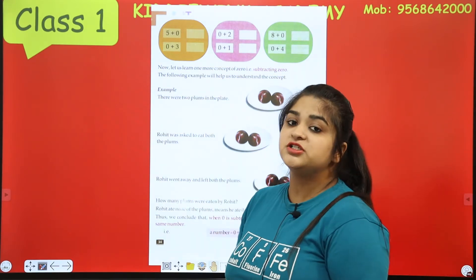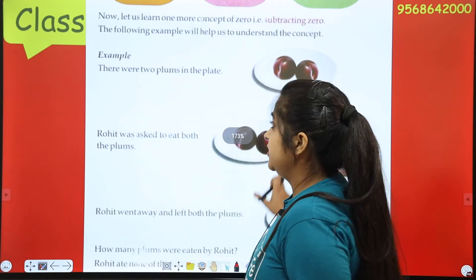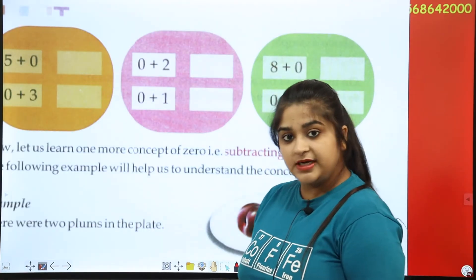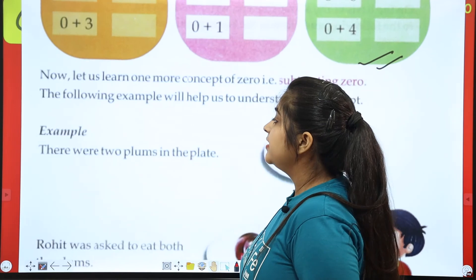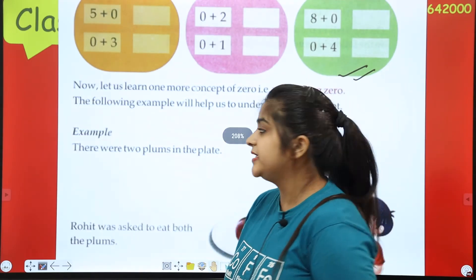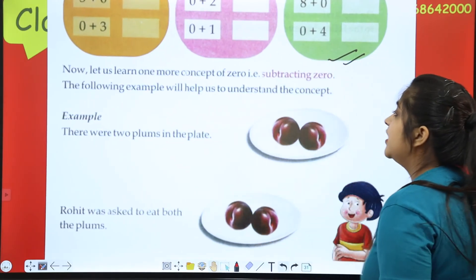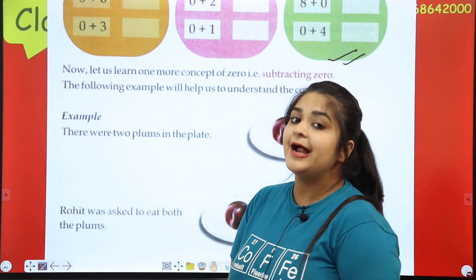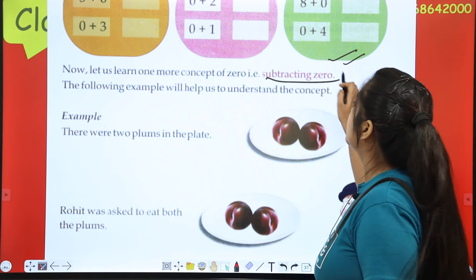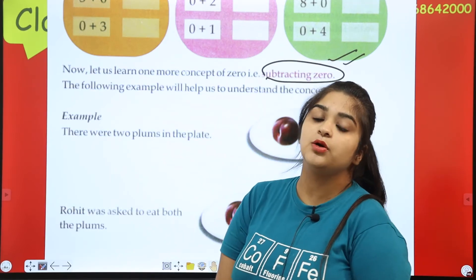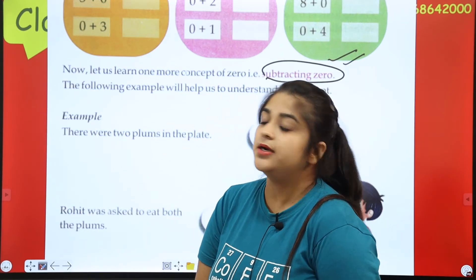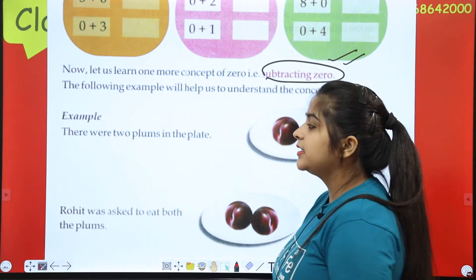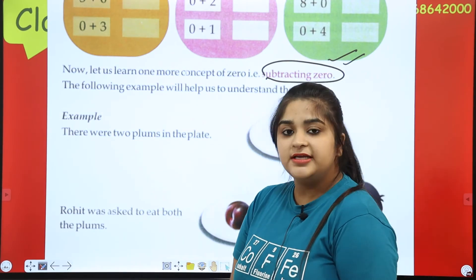Now we are going to page number 34. You have to complete the same concept there — you don't have to complete boxes separately. Now let's go to another concept. We have done adding of 0; now the next concept is subtracting 0. One more example will help us to understand and clear this concept.